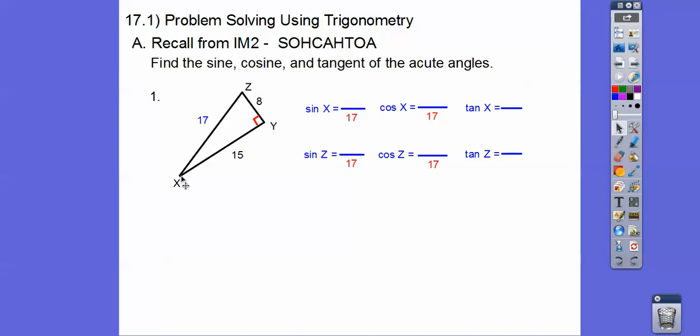All right. So the sine of x. Okay. So the sine of x is 8/17, opposite over hypotenuse. So opposite over hypotenuse. The cosine of x is adjacent over hypotenuse. Okay. So there we go. And then let's do that for the sine of z and the cosine of z. So the sine of z is 15, opposite over hypotenuse. And the cosine of z is 8 over 17 right there.